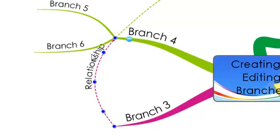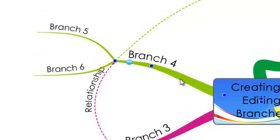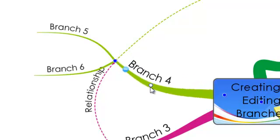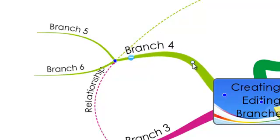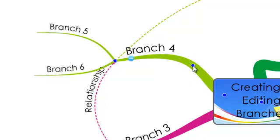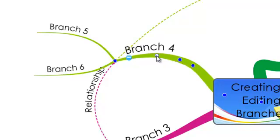You can change the shape of any of your branches by clicking on the branch so it is active and you can see the blue control points. By clicking on one of the blue control points and dragging the branch, you can see that you can change the shape. When you release, the branch will stay in that position, giving you extra control over the layout and look of your map. You can also add new control points by clicking shift and then clicking on the point in the branch where you want a new control point. The more control points there are, the more you can control the shape of the branch.